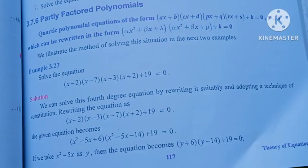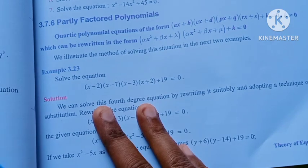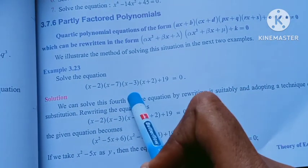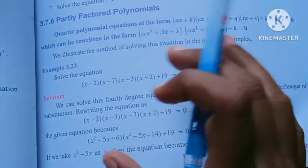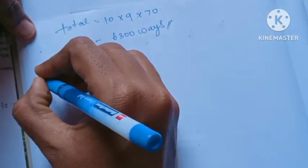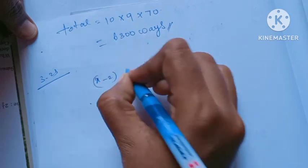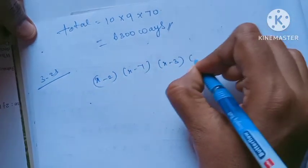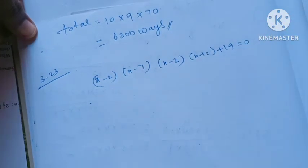Hi students, I am Bino. XII month chapter 3, example 3.23. We can read the question when we get started. Solve the equation: (x-2)(x-7)(x-3)(x+2) + 19 = 0. We can solve the equation.